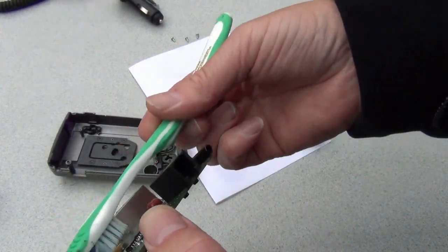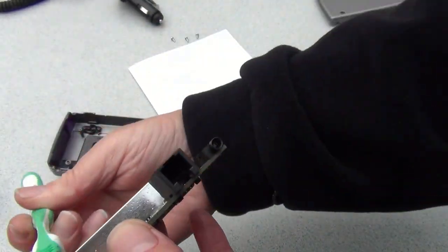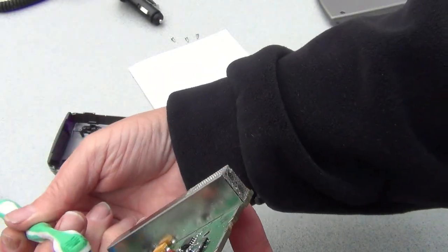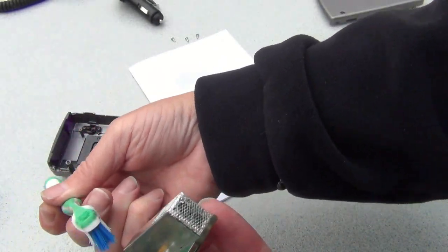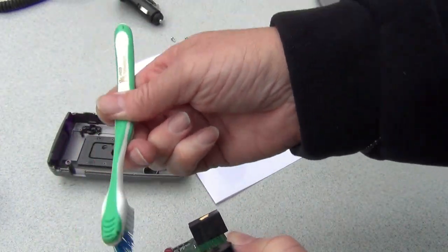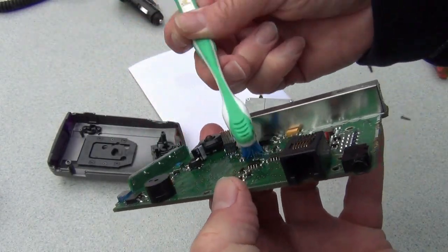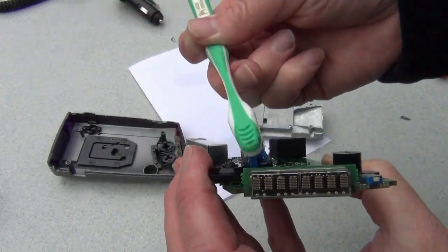So we want to clean the contacts, but we don't want to bend them out of position. Because if we bend them out of position, they won't go back in the connector. So we want to be very careful not to do that. But at the same time, try to get as much of the metal contacts as you possibly can.